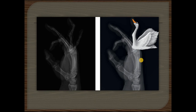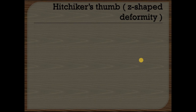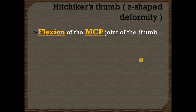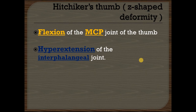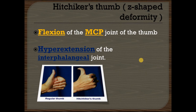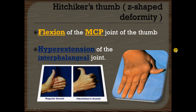Another deformity is the hitchhiker's thumb, also called the Z-shaped deformity. In this deformity there is flexion of the MCP joint of the thumb and hyperextension of the interphalangeal joint. In the thumb there is no DIP or PIP joint — only the IP joint. So there is hyperextension of the IP joint and flexion of the MCP joint. You can see the difference between a regular thumb and the hitchhiker's thumb, and why it is called Z-shaped.